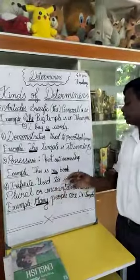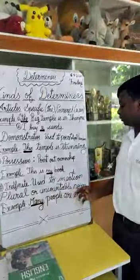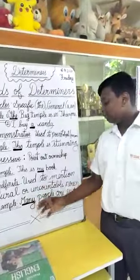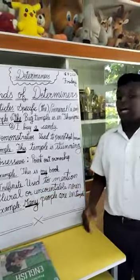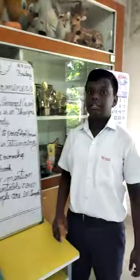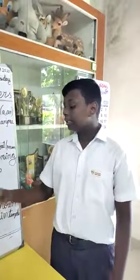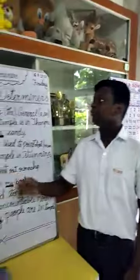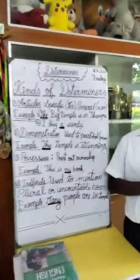Next, indefinite. Indefinite is used to mention plural or uncountable nouns. For example, 'many people are in the temple'. Here, I am telling that lots of people are in the temple. So, this is called indefinite determinants. Thank you.